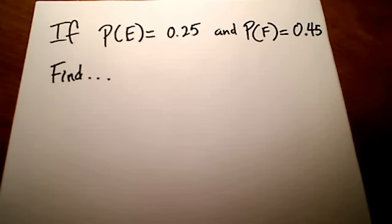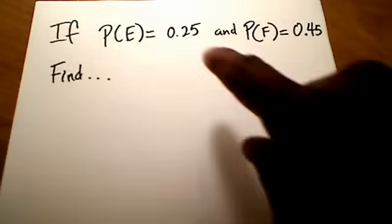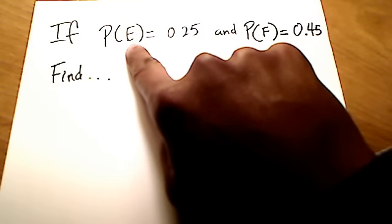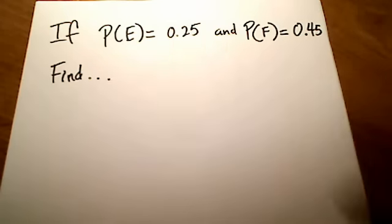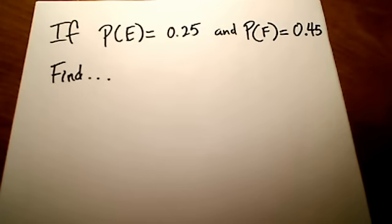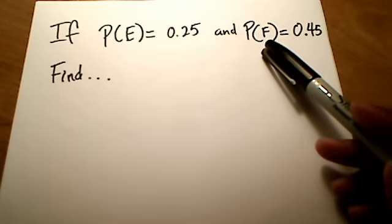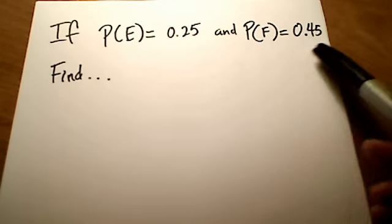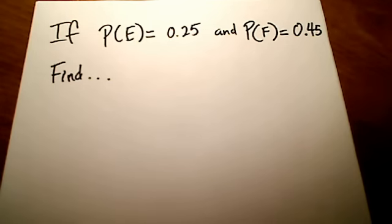This video shows several examples of how probability rules work. When we say probability, if you look at this notation, you'll see that the probability of event E is equal to 0.25, and the probability of another event F is 0.45. This is coming from a section in our book that has to do with probabilities, and especially something called the addition rule.